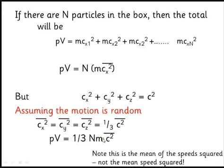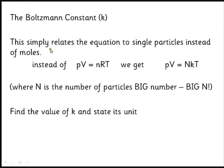This gives us the ideal gas equation: PV = ⅓Nmc̄². You don't need to reproduce this derivation — you just need to know the assumptions. The Boltzmann constant k relates to a single particle: PV = NkT, where N is the number of particles (a very large number), compared with PV = nRT where n is the number of moles (a small number).